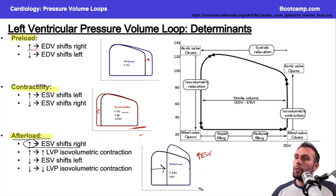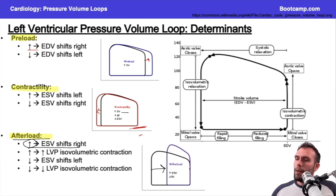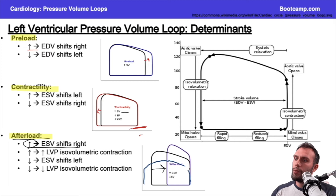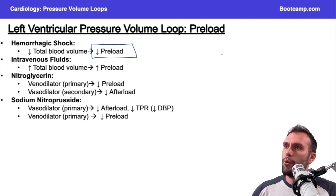What would the curve look like with lower afterload? The end-diastolic volume probably won't change. I'll have a lower height from the reduced afterload, and the curve shifts — the end-systolic volume decreases because I'm getting more blood out against a lower pressure. I also won't need to generate as high a left ventricular pressure to get the aortic valve to open.